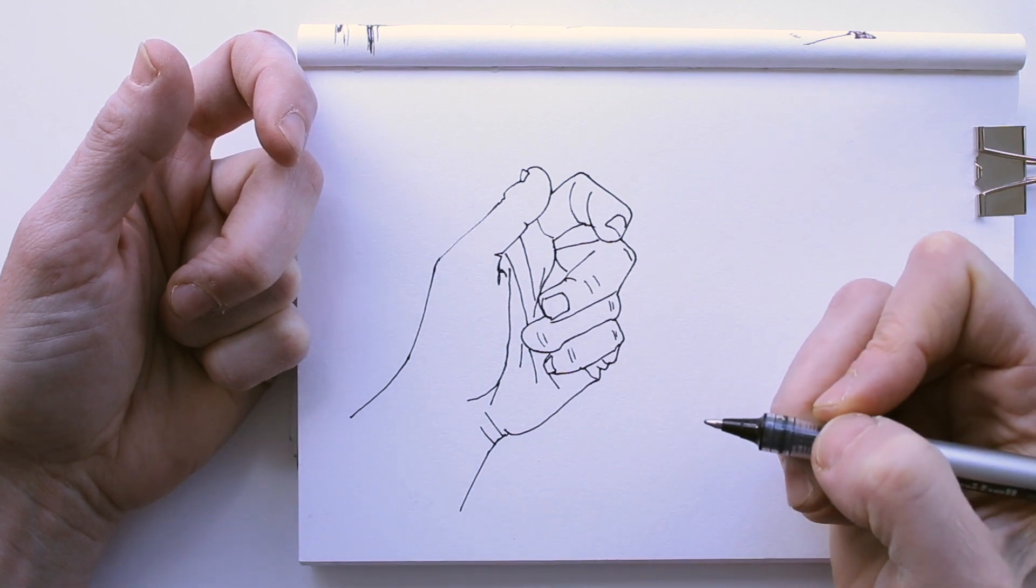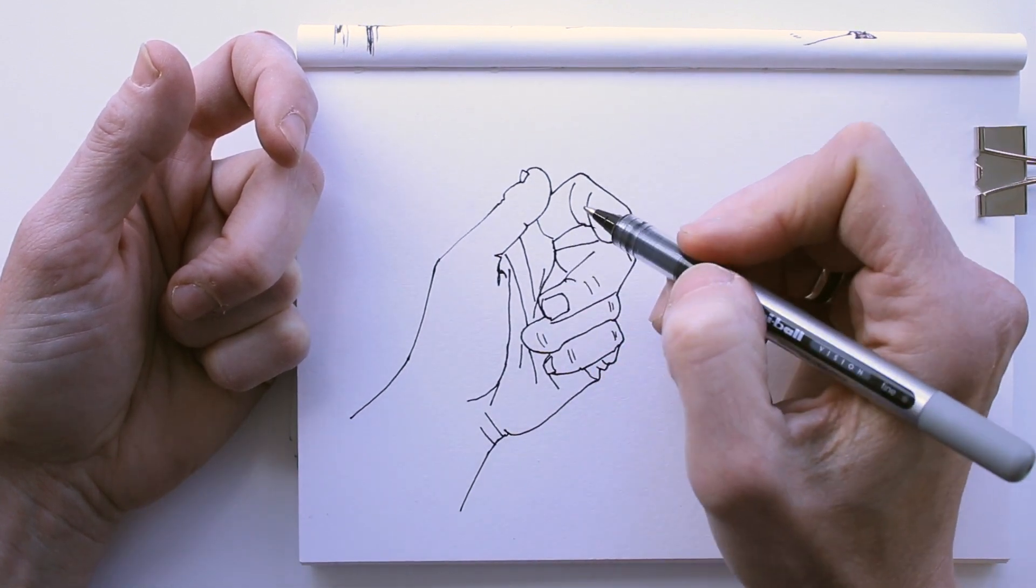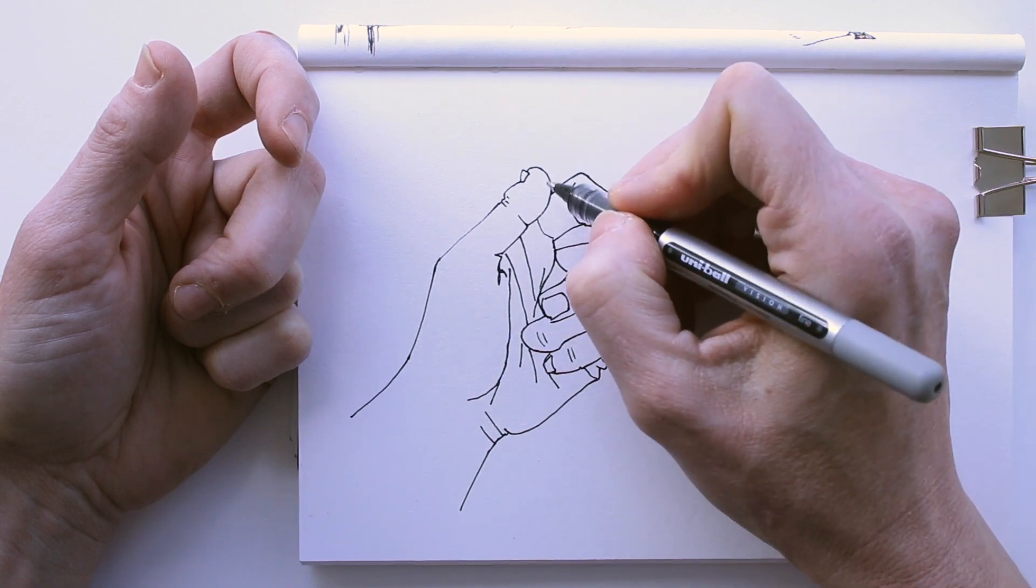Next week we will add a little bit of shadow to give this drawing some sense of depth using hatching lines. See you then!